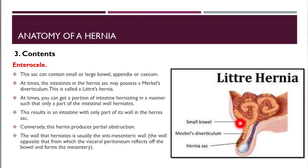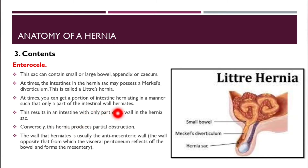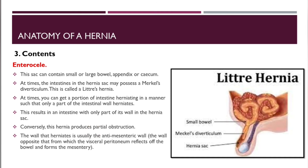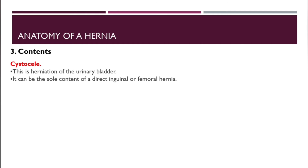At times the intestines in the hernial sac may possess a Meckel's diverticulum — this is called a Littre's hernia. At times a portion of the intestine herniates such that only part of the intestinal wall herniates; this results in an intestine with only part of its wall in the hernial sac. This hernia produces partial obstruction. The wall that herniates is usually the anti-mesenteric wall — that is, the wall opposite from which the visceral peritoneum reflects off the bowel and forms the mesentery.